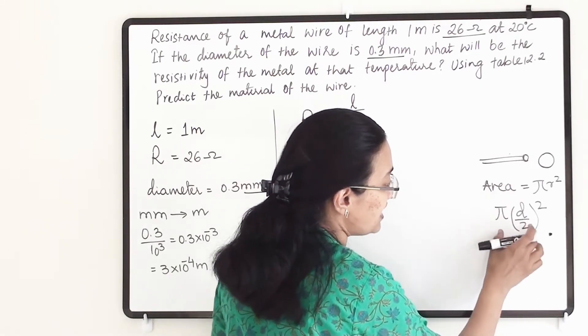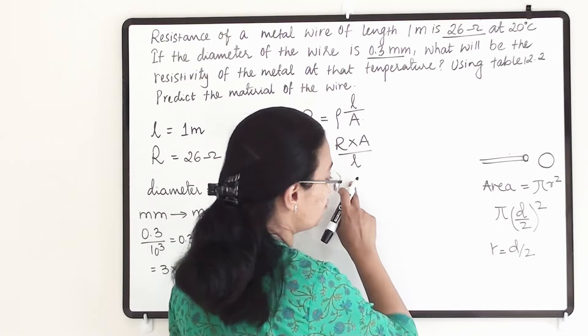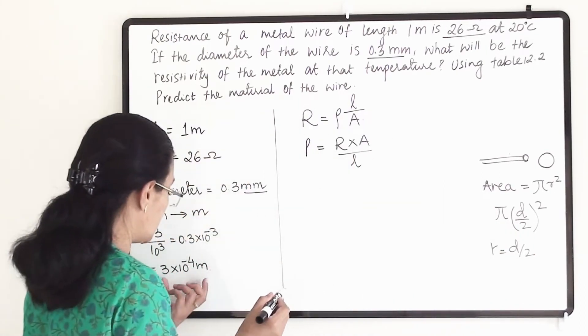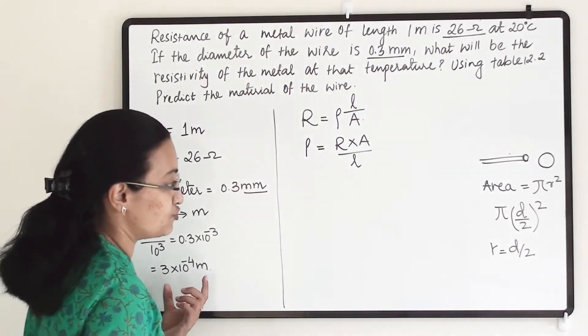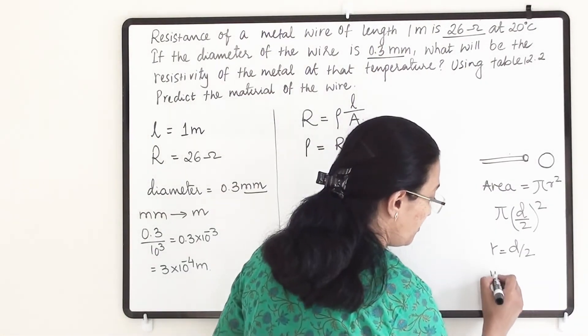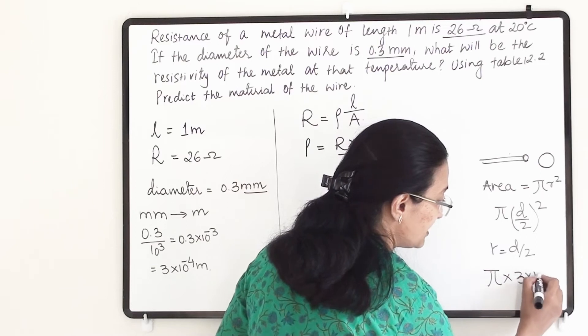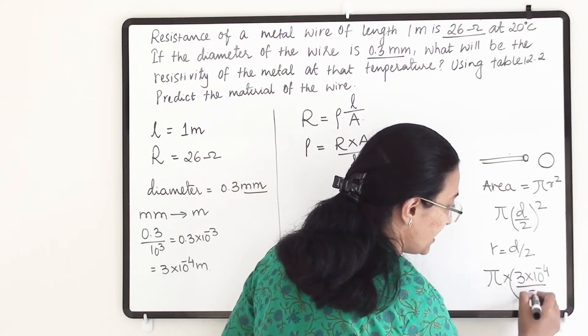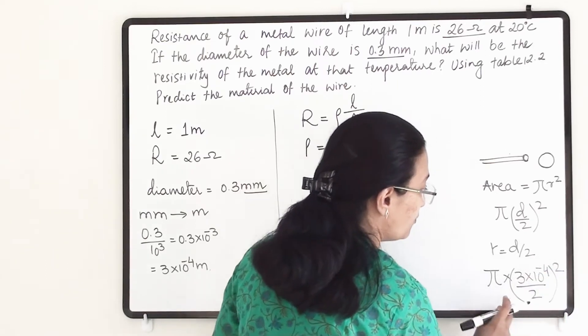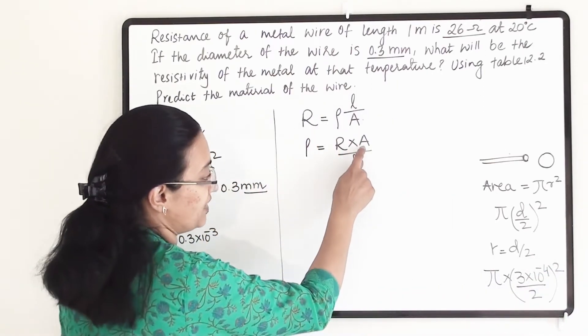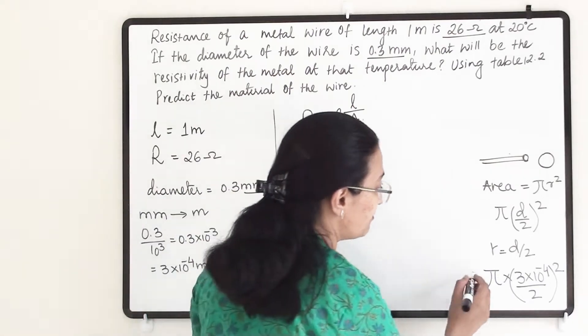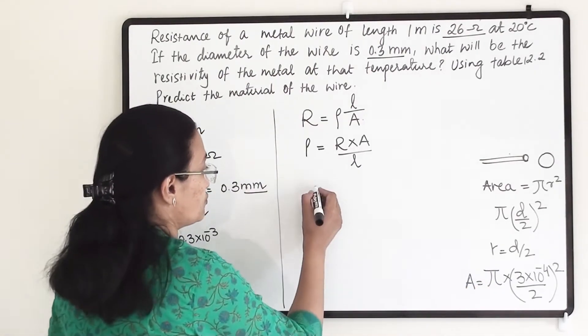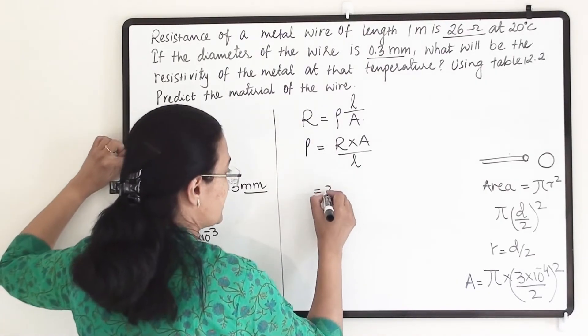This area formula I am going to use here. Instead of D I will use 3 into 10 raise to minus 4. So pi into 3 into 10 raise to minus 4 divided by 2, whole square, will come at the place of A because this will give us area of the conductor.